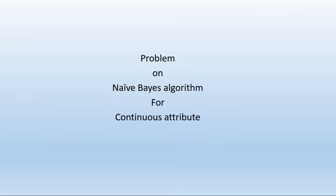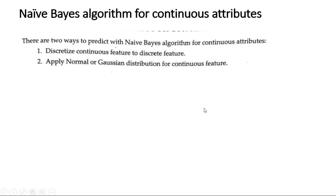Hello and welcome to the session. In this session, we will discuss a problem on Naive Bayes algorithm for continuous attributes. Please refer to the Naive Bayes algorithm problem for discrete attributes in the previous lecture — the link is given in the description box. If you have continuous attributes in your training dataset, there are two ways to predict using the Naive Bayes algorithm.